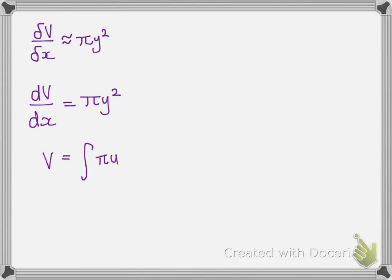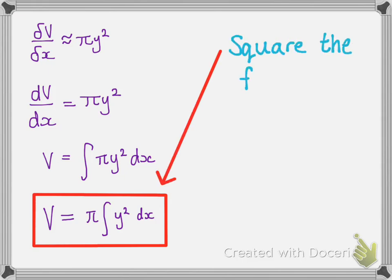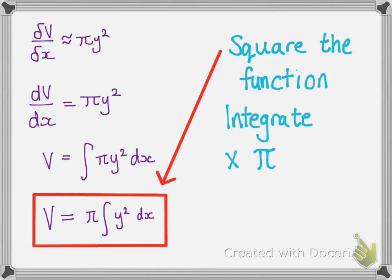If we take this to the limit, we get dV/dx = πy². Integrating dV/dx gives us V, so it follows that we can find the volume by integrating πy². We can also take that π outside of the integral — you can take constants out — which keeps the integration a little simpler. So we square our y function, integrate it putting in the values of the limits, and then multiply by π.